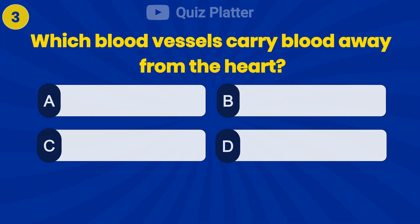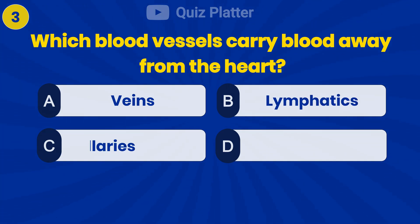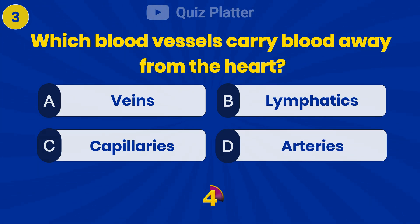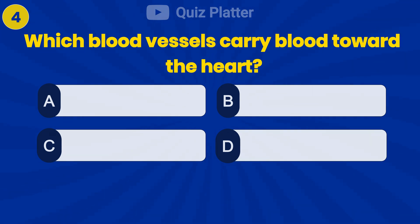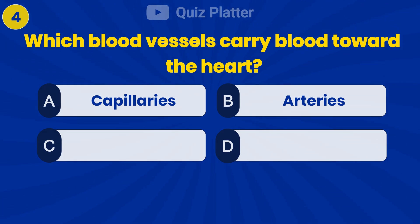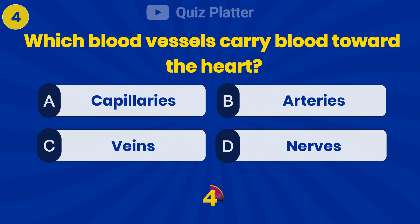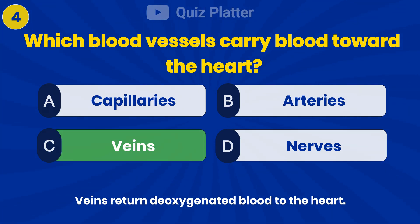Which blood vessels carry blood away from the heart? Answer D: Arteries. Which blood vessels carry blood toward the heart? Answer C: Veins.